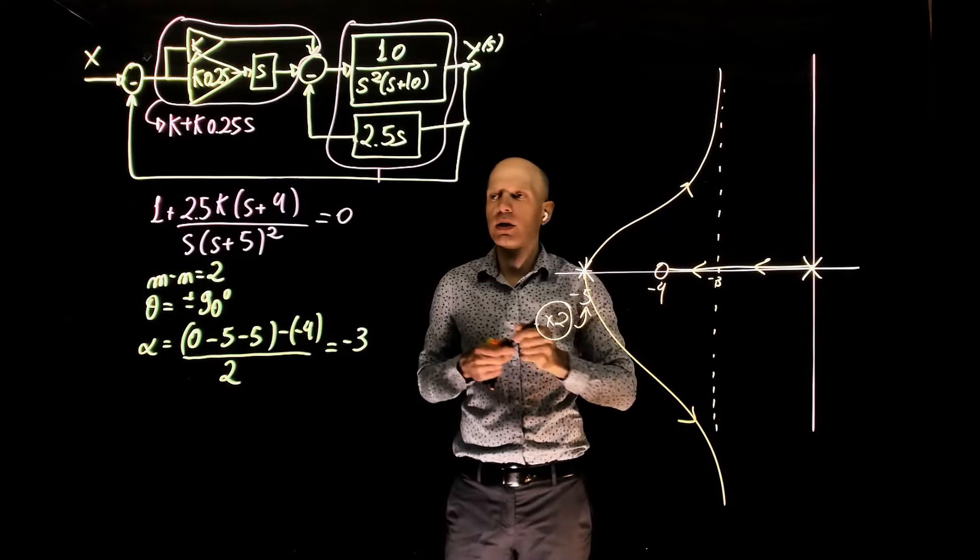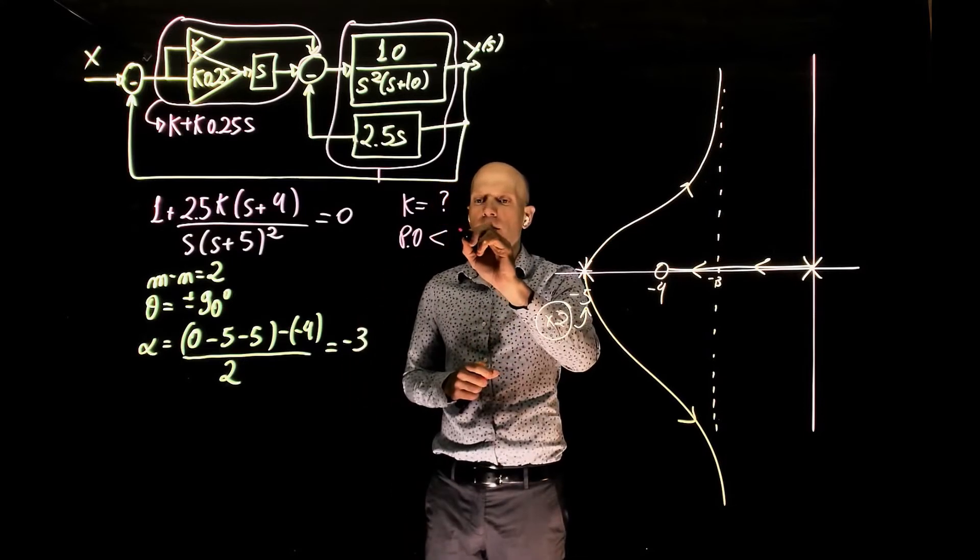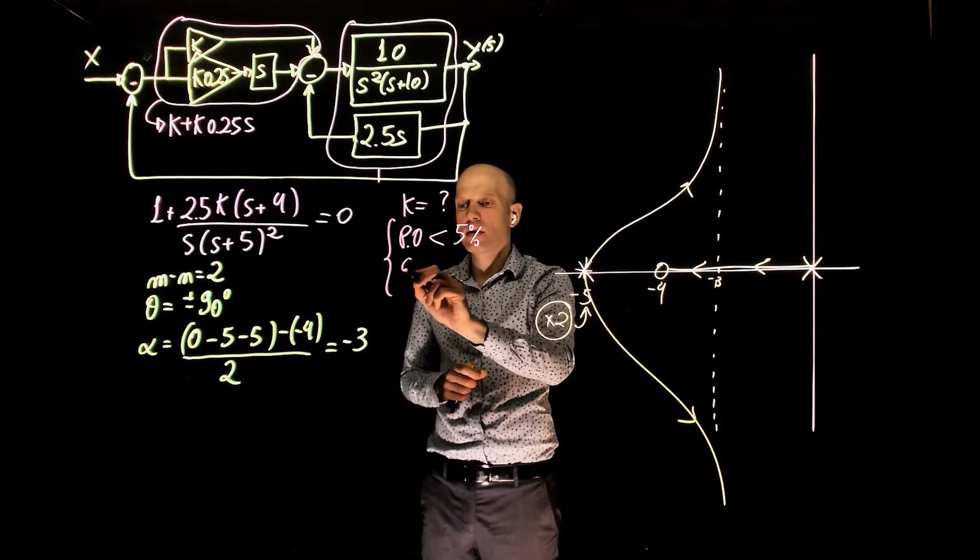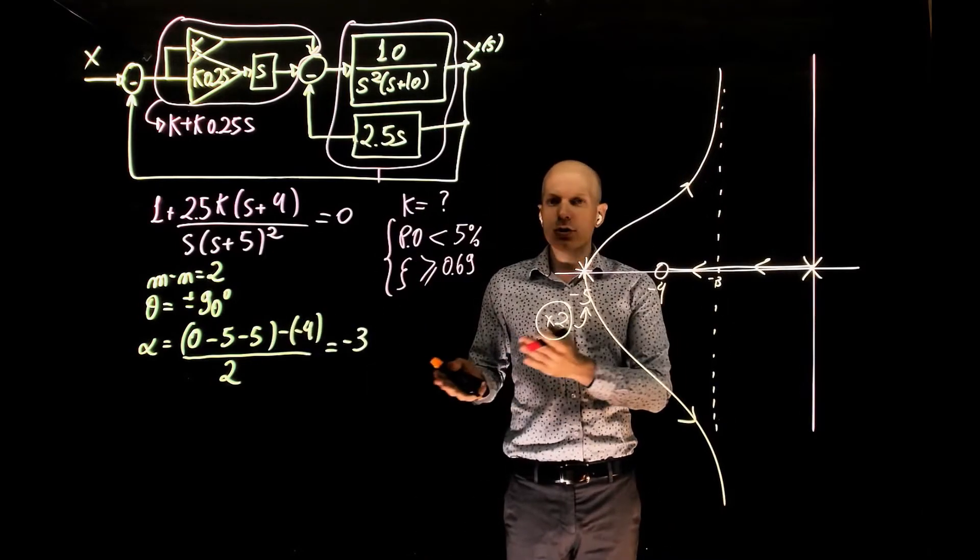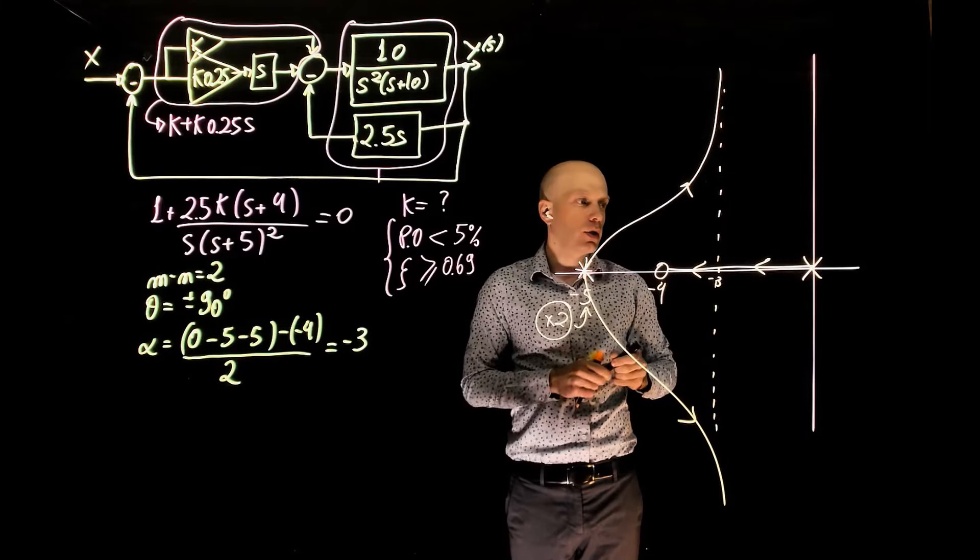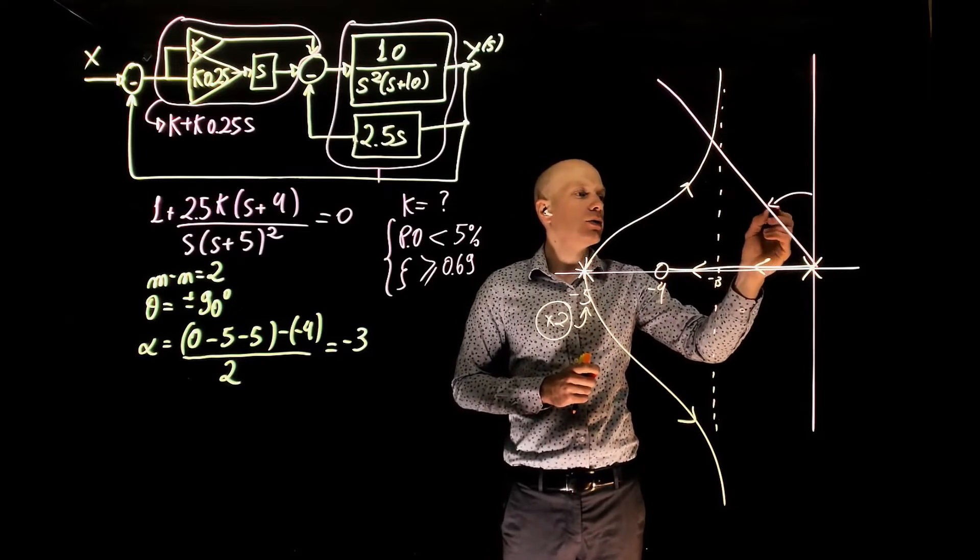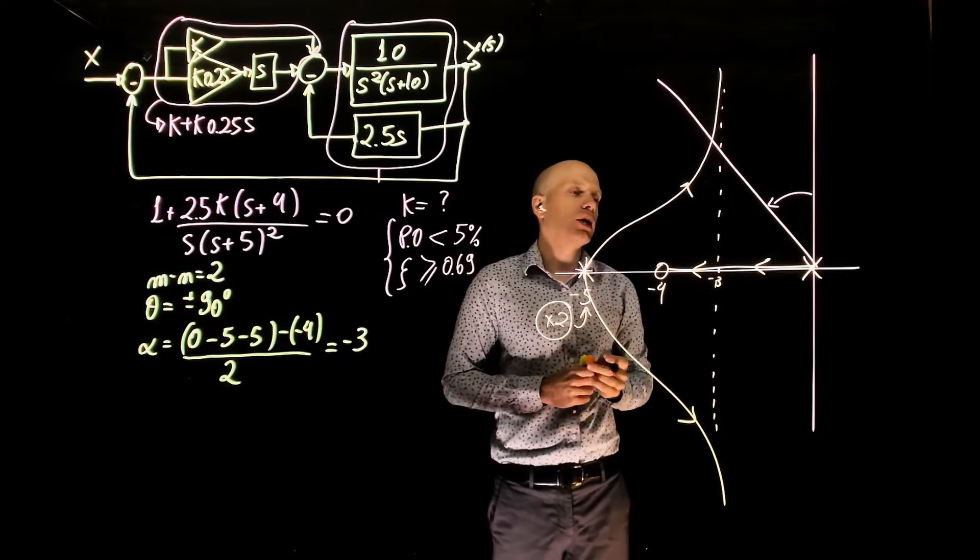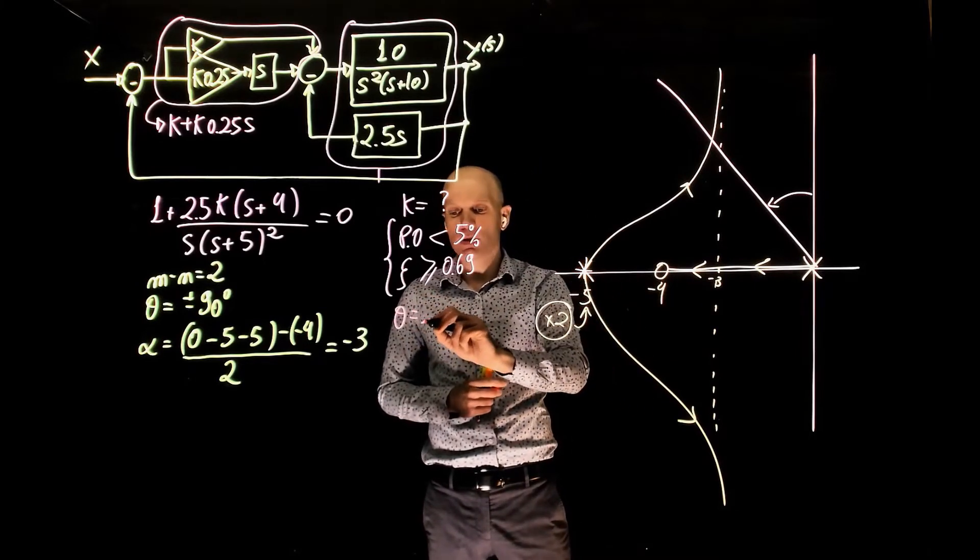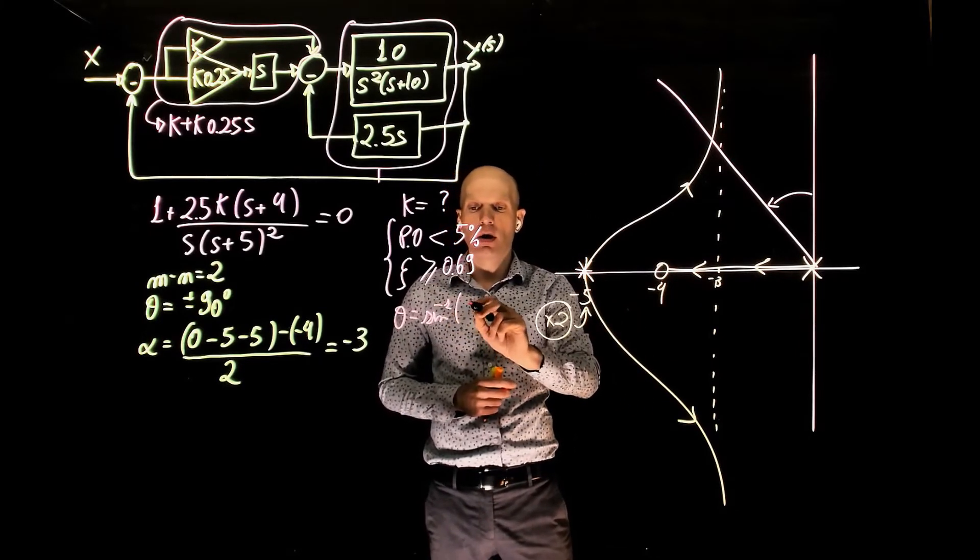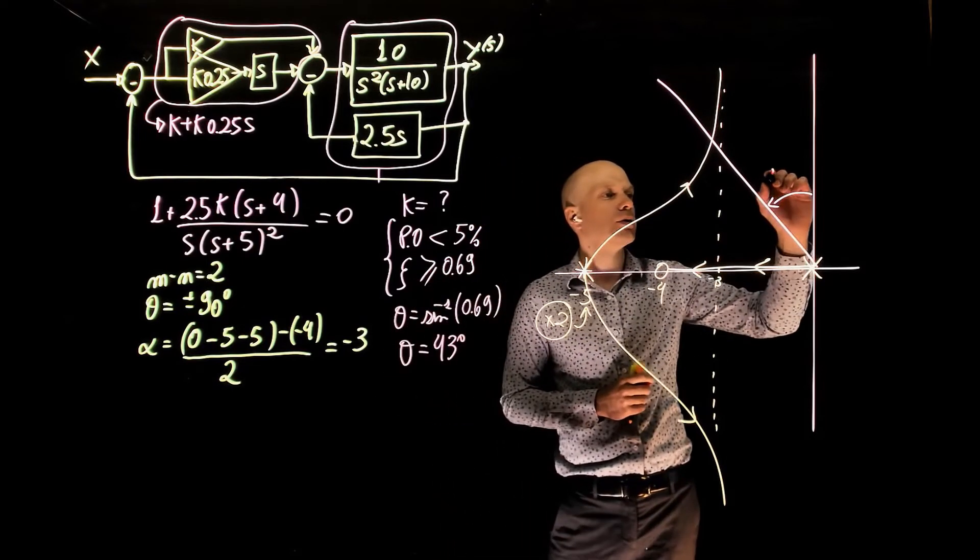The question that we started with is, what is the value of k so that the percent overshoot is less than 5%, which is the same as saying the damping ratio is greater or equal to 0.69. Now here to solve for this, we'll use the same approach we used in the last lecture. If we trace a line starting at the center of the s-plane, the angle here is a function of zeta, and any point along this line we have the same damping ratio. The damping ratio is 0.69, so theta is sine minus 1 of 0.69, theta is around 43 degrees. This angle here is 43 degrees.